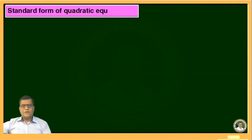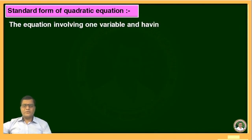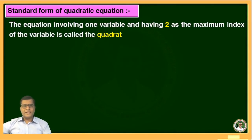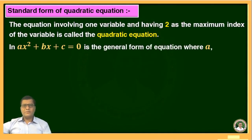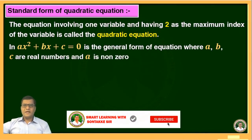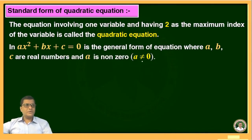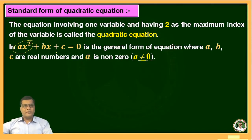Now we will see the standard form of a quadratic equation. The equation involving one variable and having 2 as the maximum index of the variable is called the quadratic equation. ax² + bx + c = 0 is the general form, where a, b, c are real numbers and a is non-zero. If a = 0, then it is not a quadratic equation but a linear equation in one variable.